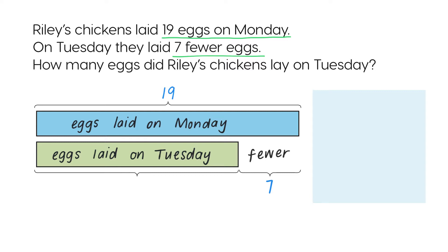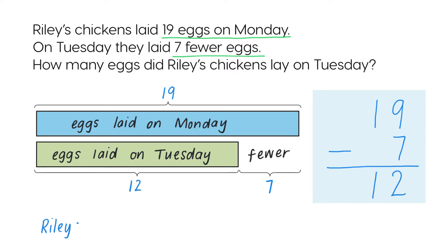The bar model shows us what we need to do. To find the number of eggs laid on Tuesday, we subtract the difference from the number of eggs laid on Monday. 19 subtract 7 is 12. So Rylee's chickens laid 12 eggs on Tuesday.